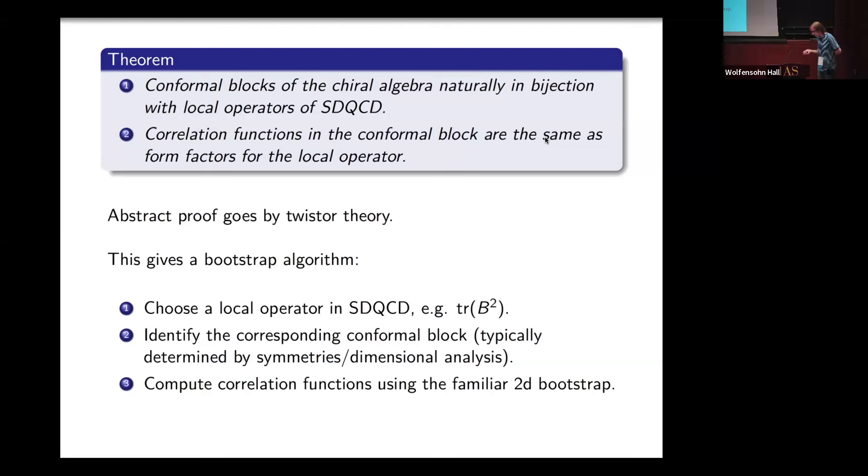This gives us a bootstrap algorithm. We choose some local operator, say trace B squared. To recall, trace B squared is good because form factors of this are amplitudes of QCD. Then we identify the corresponding conformal block. Then we compute correlation functions using the very familiar 1980s 2D bootstrap.